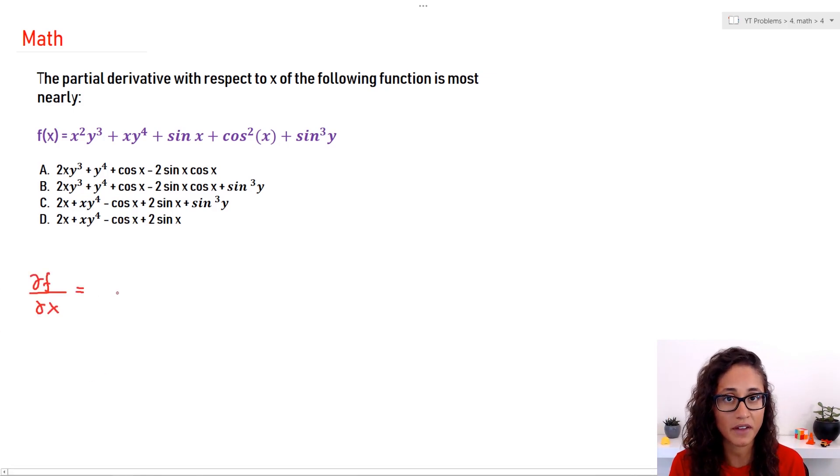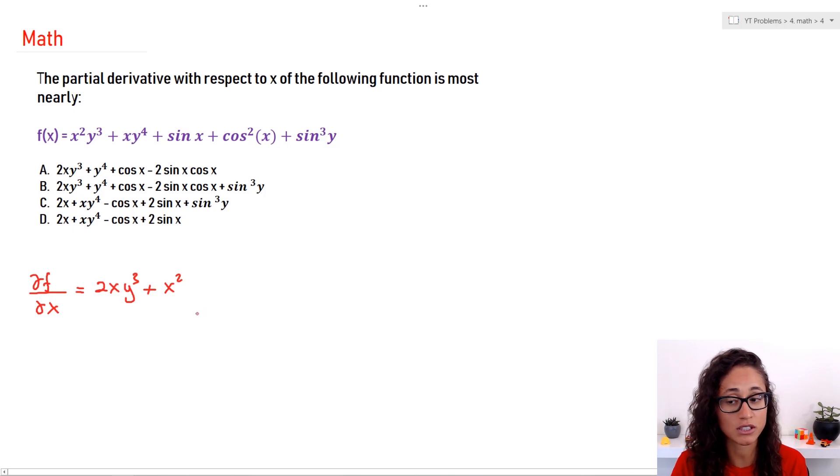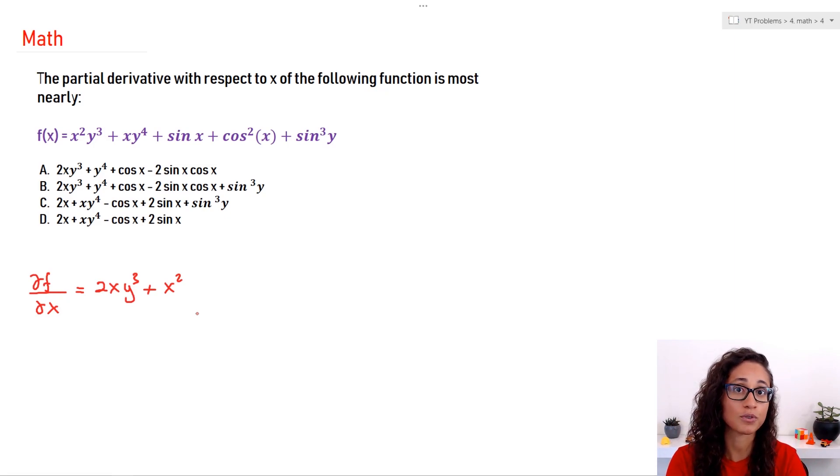So if we look at x squared y cubed, what I should do is take the derivative of x squared first, multiply by y cubed, then add x squared and multiply by the derivative of y cubed. So the derivative of x squared is 2x times y cubed, and then I add x squared. Then I take the derivative of y cubed. Well, y cubed is treated as a constant, and derivative of constant is zero.